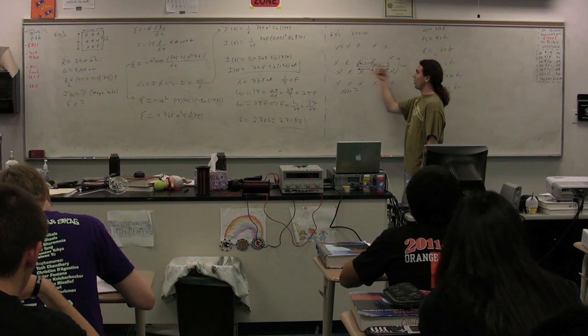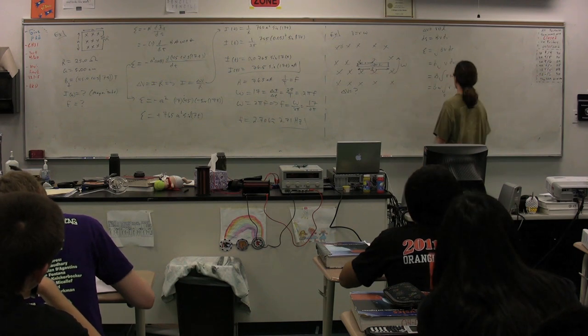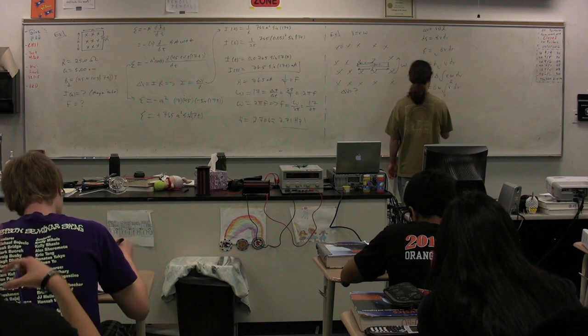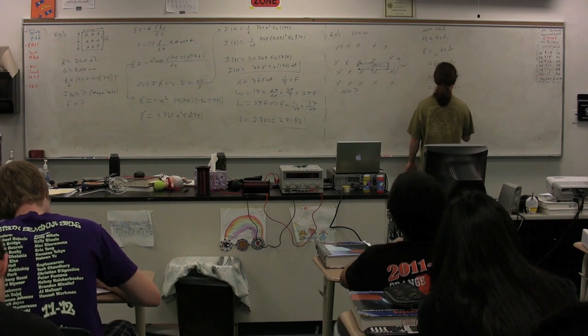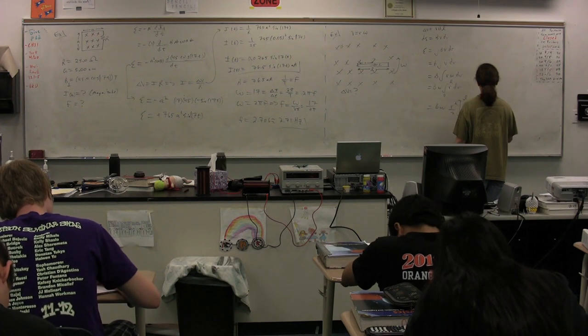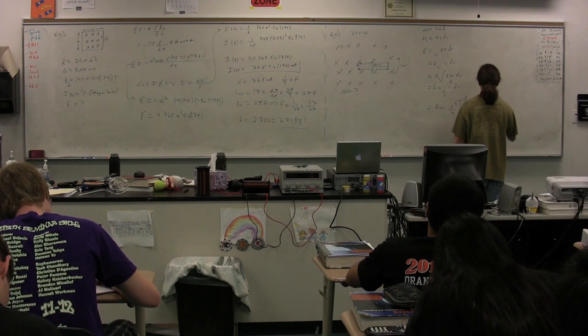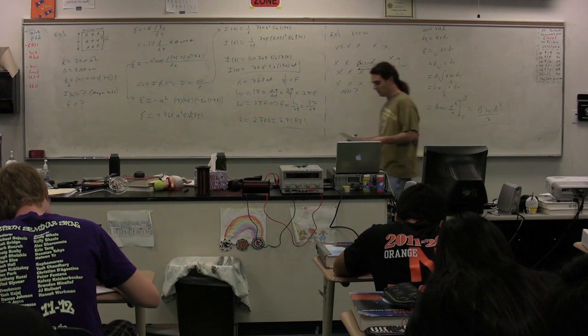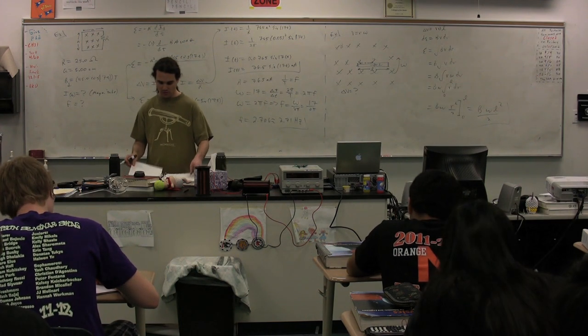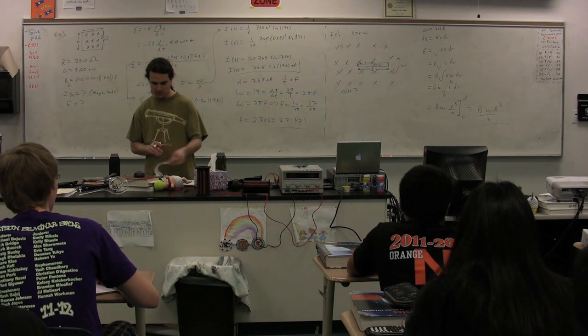So we have then B omega r squared over 2 from zero to L. So B times omega times L squared over 2. It's going to be equal to the EMF set up between the two ends of this item spinning.